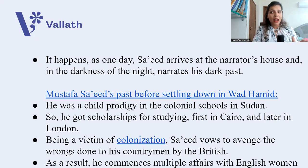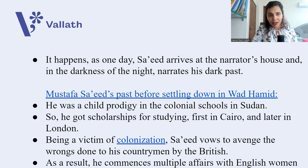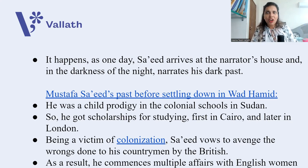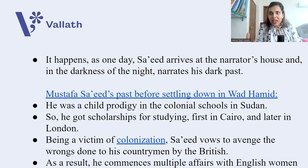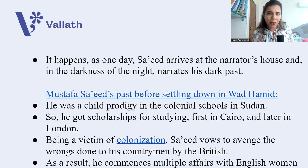Before settling in Wad Hamid, Said was a child prodigy in the colonial schools of Sudan. He got scholarships for studying first in Cairo, Egypt, and later in London. Being a victim of colonization, Said vows to avenge the wrongs done to his countrymen by the British. He says the Britishers brought guns, not education — they did not come to civilize Sudan but to violate it and take its resources. He hates the British, and now that he is in their land, he wants to avenge the wrongs done to Sudan.